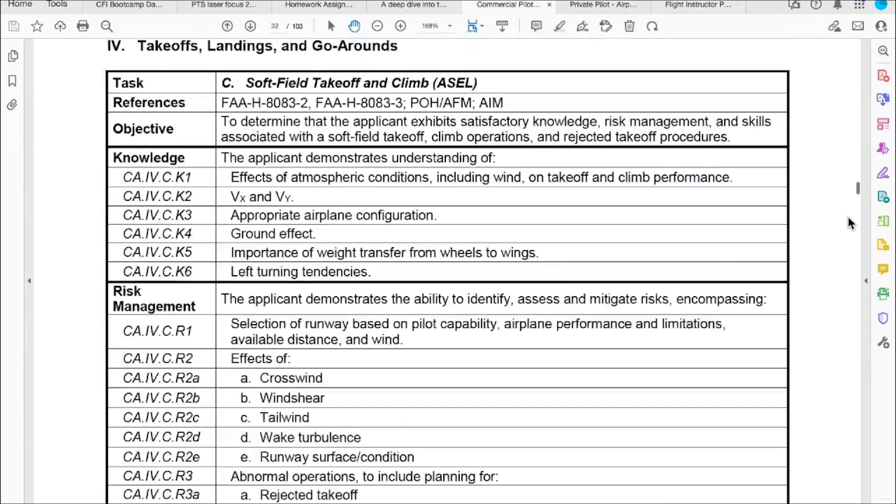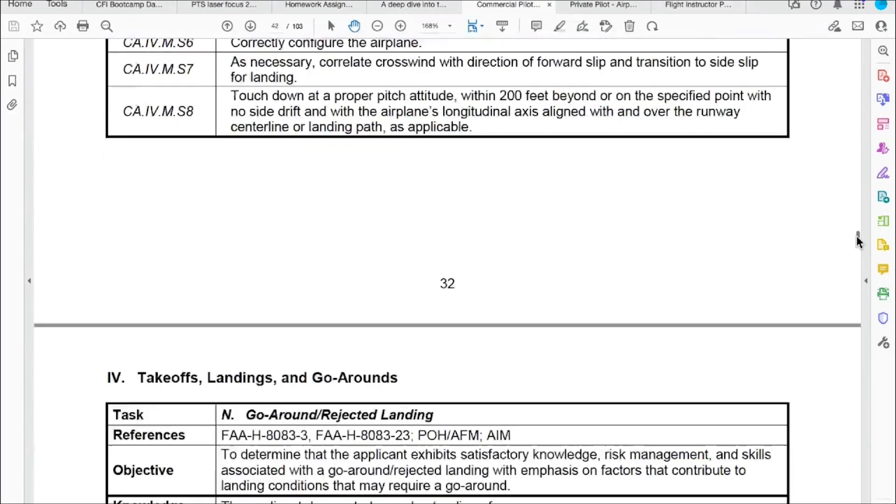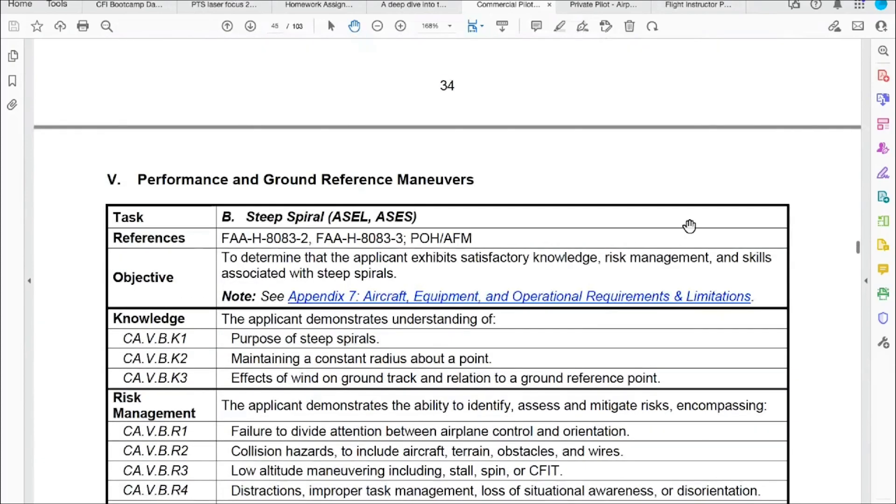That's performance maneuvers. The FAA uses the broad term performance maneuvers because then they can make it whatever they want. If they say lazy eights, it's codified into the regulation and there's no way to change that except through rulemaking. So this is performance and ground reference.